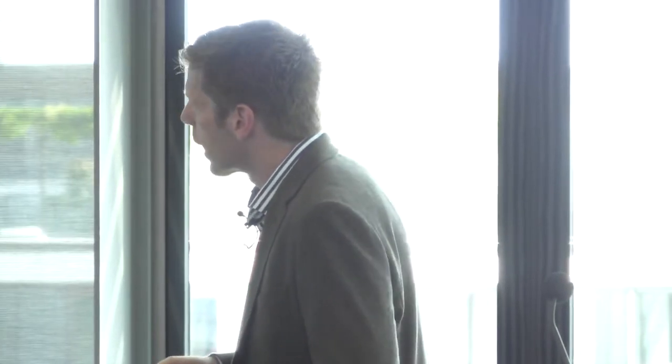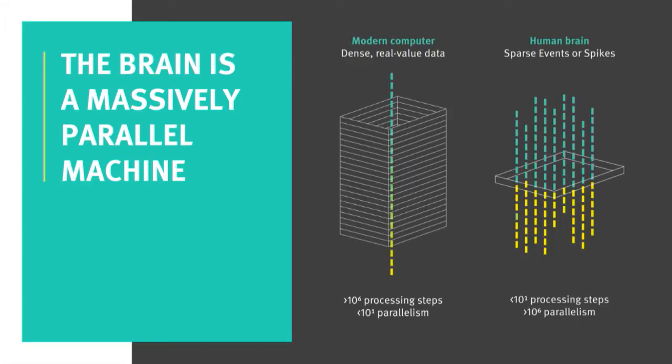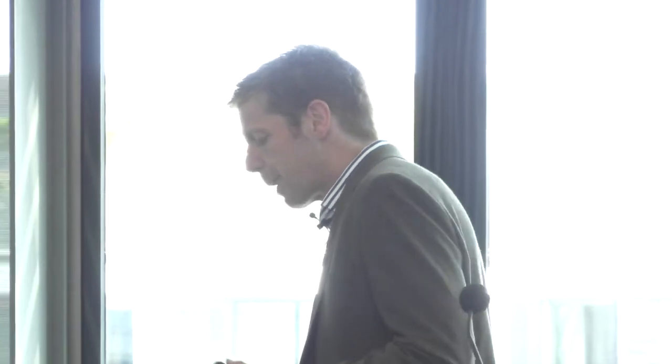We don't know everything about the brain; there's still a lot more to explore. But one really important thing we do know is massive parallelism. In today's chips, we see parallelism of maybe tens or hundreds of cores, no more than that, meaning we have to solve problems in a lot of processing steps. The brain has orders of magnitude higher parallelism — all the neurons fire in parallel — meaning we need fewer processing steps and can find patterns faster.